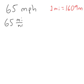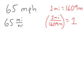Therefore, 1 mile divided by 1609 meters equals 1. Because if this is equal to that, then this divided by that equals 1.